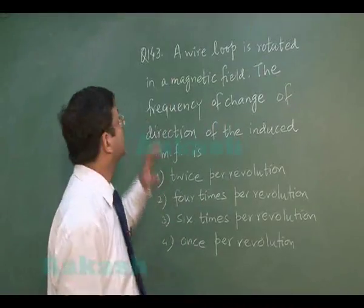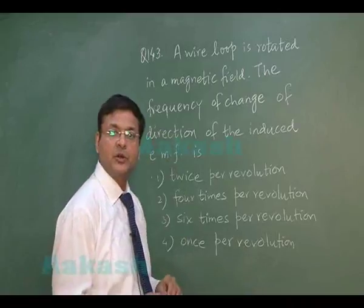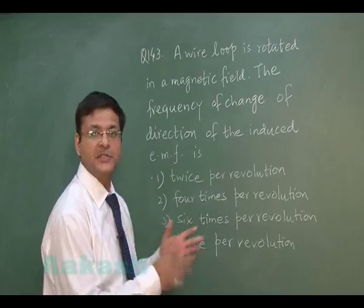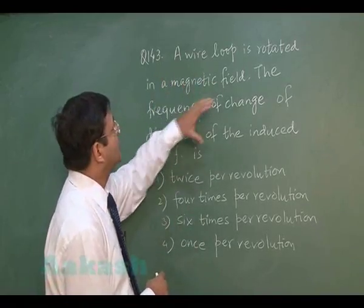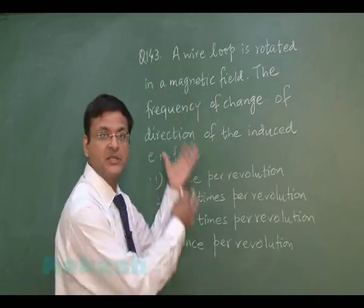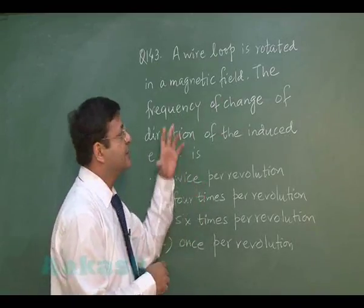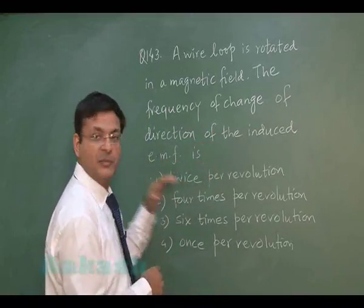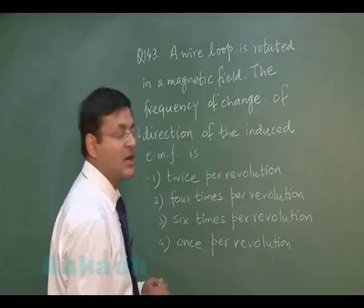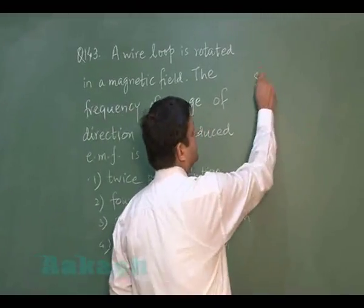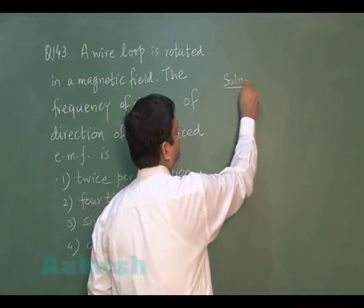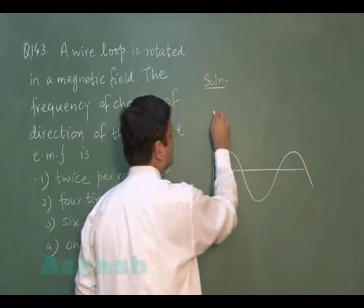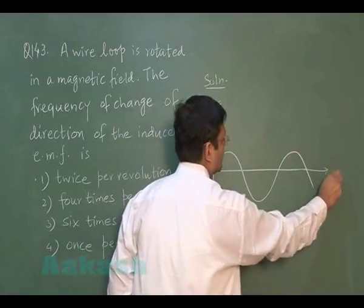Question 143 is based on a coil rotating in a magnetic field — the basics of generating alternating current. A wire loop is rotated in a magnetic field. The question asks about the frequency of change of direction of the induced EMF. To answer this, plot how the EMF is generated over time — it follows a sinusoidal waveform.